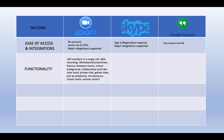Zoom also has other collaborative tools: raise hands, where participants can signal they have a question; private chat; gallery view to see all participants at once; join by telephone by dialing a number given with every meeting; simultaneous screen share for multiple participants; and remote control functionality to control another person's device.